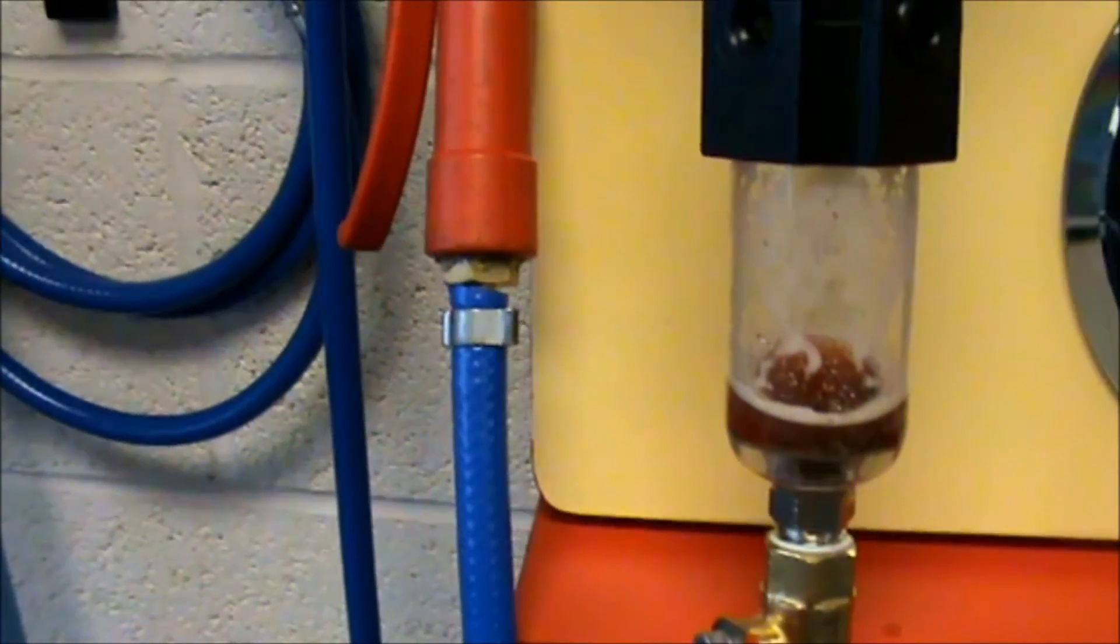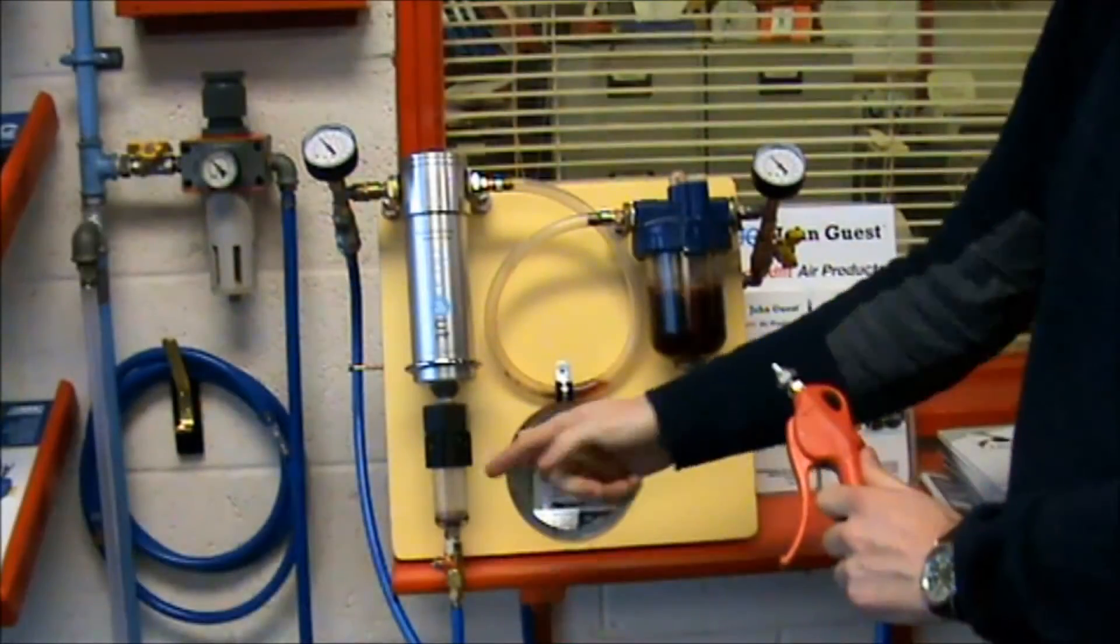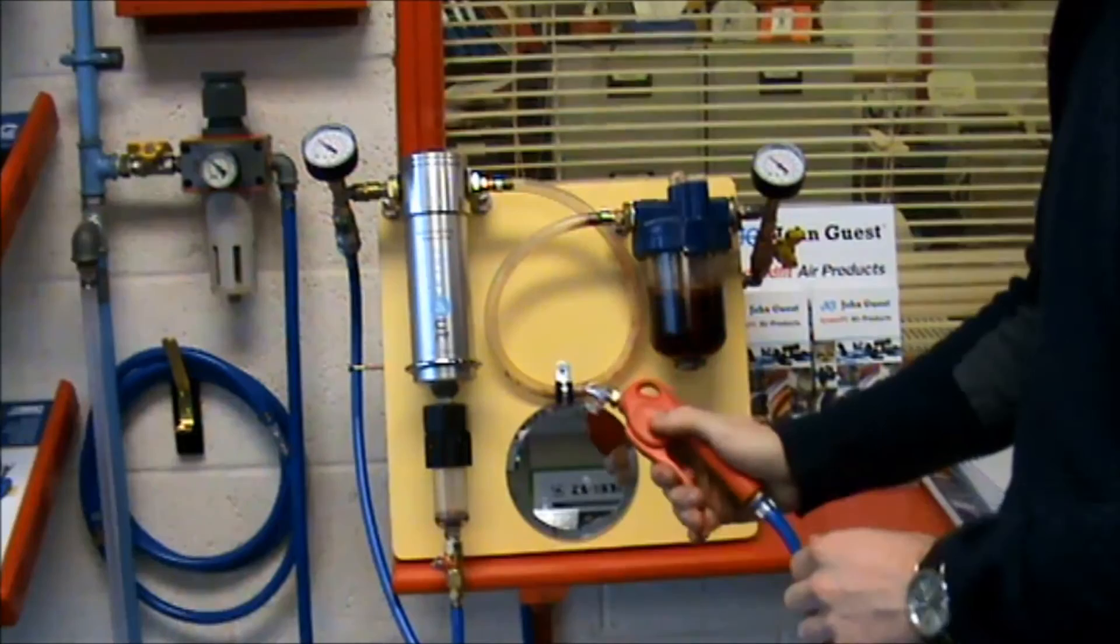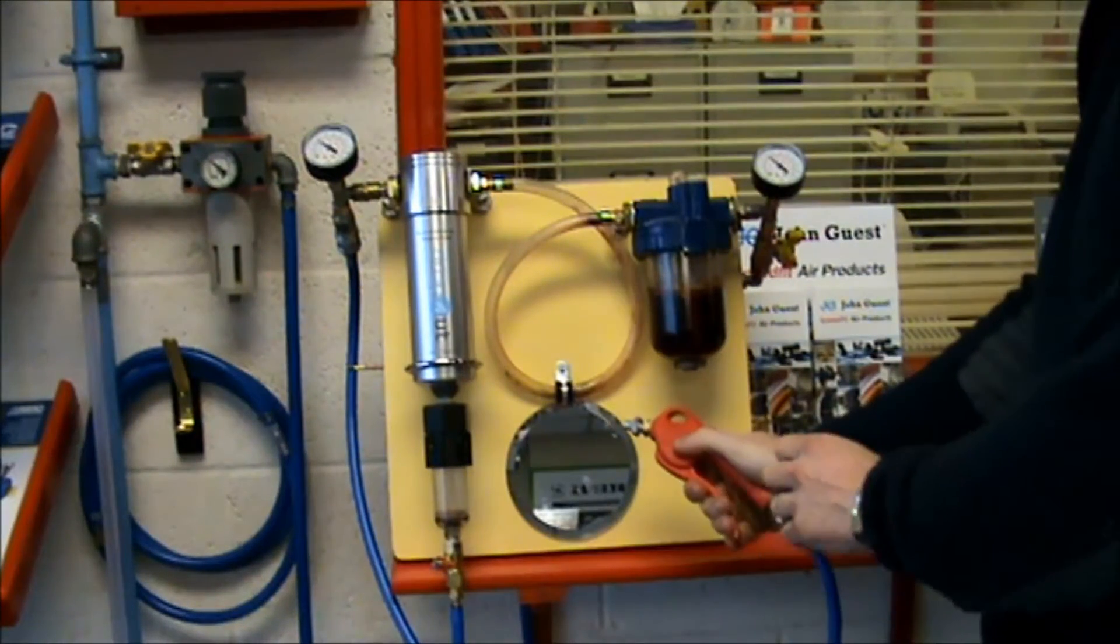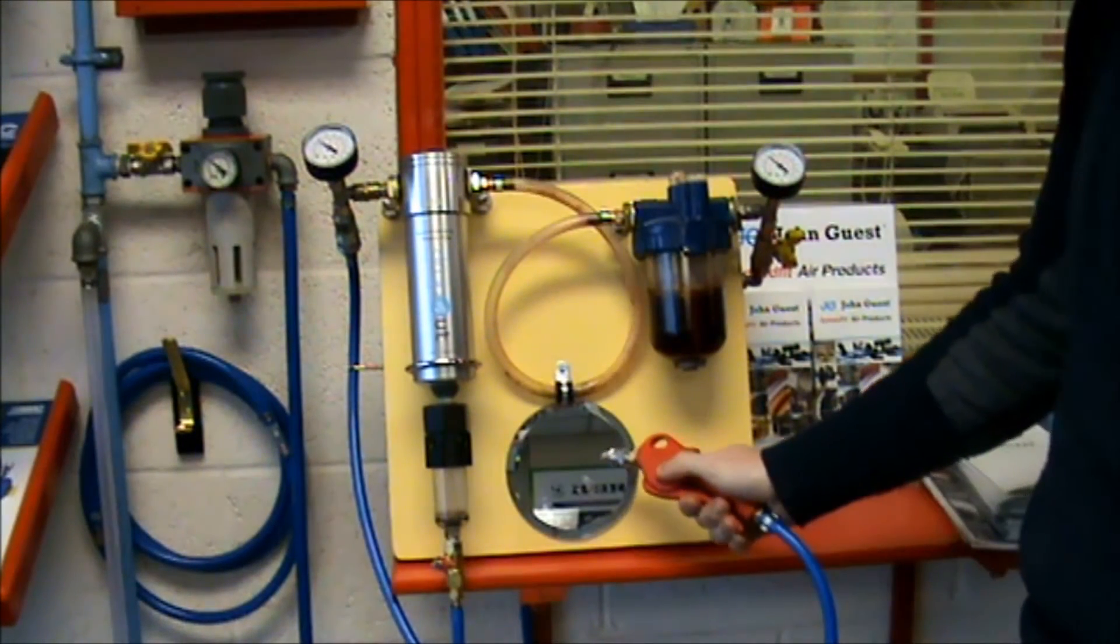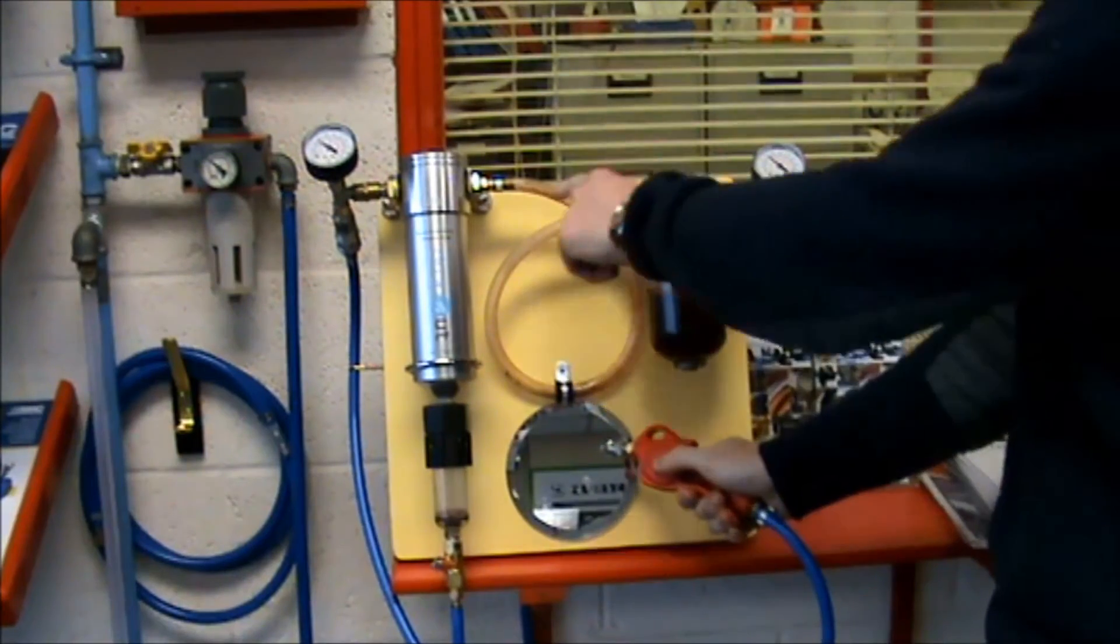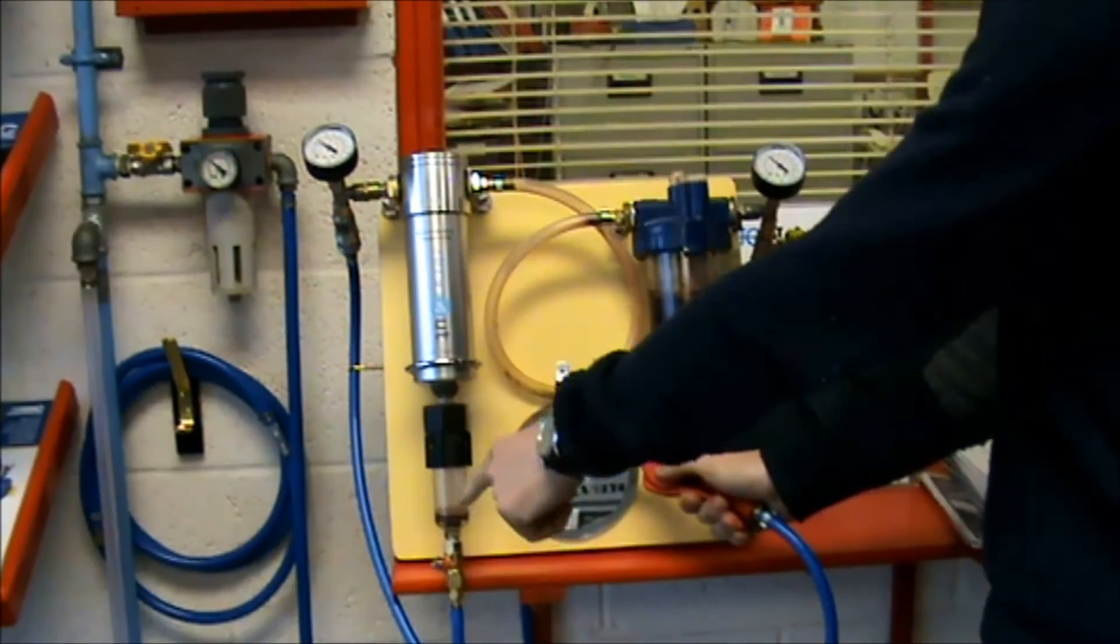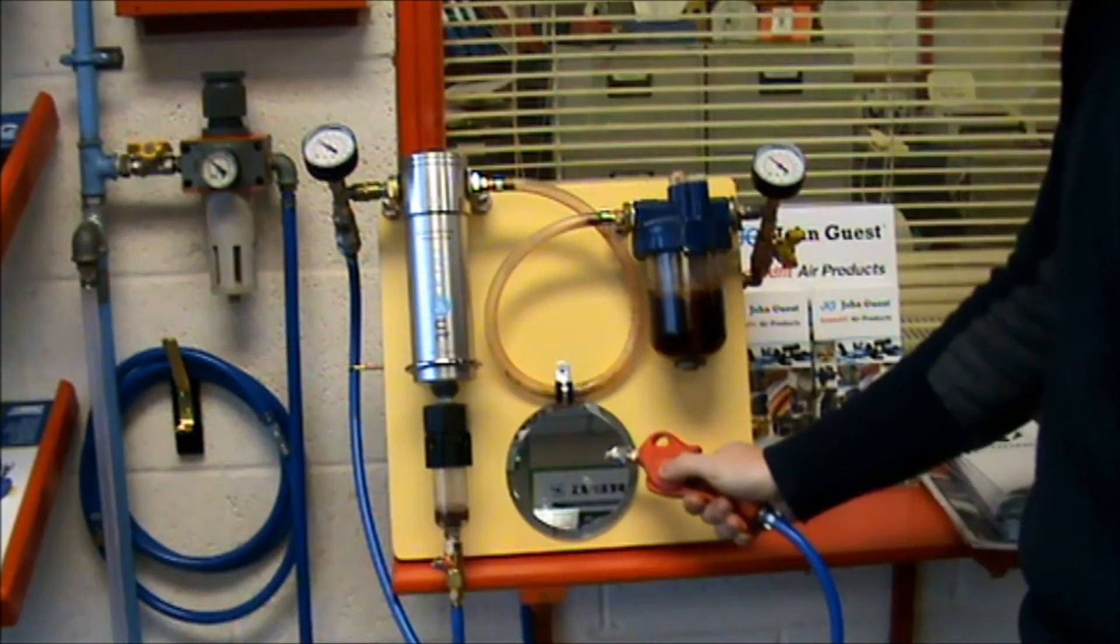The dirt the dropout filter removes can be seen in the drain. The dropout filter will then remove all the dirt from the water, leaving clean air coming out of the blowgun, as shown on the mirror.